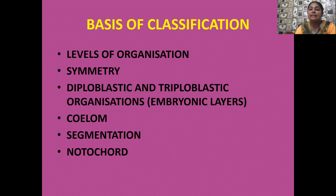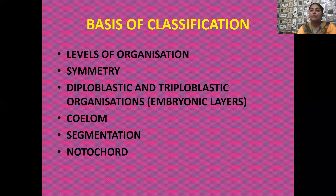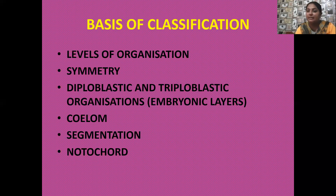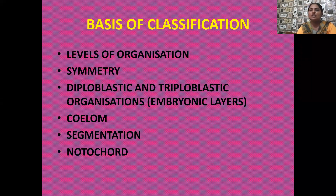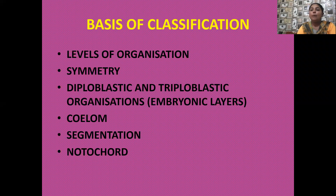The second character considered as a basis of classification is symmetry. Any animal has a particular body shape, and when we try to cut its body in a particular plane, we may or may not get equal halves — that property is known as symmetry. For example, sponges are asymmetrical animals. If we cut the body of a sponge in any plane, we are not able to obtain equal halves. Such type of animals are called asymmetrical animals.